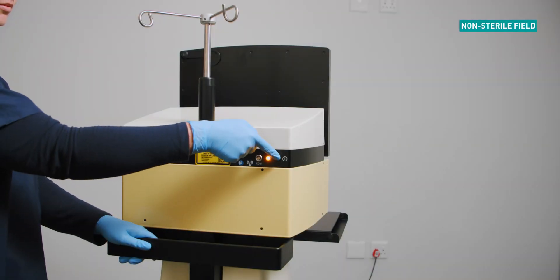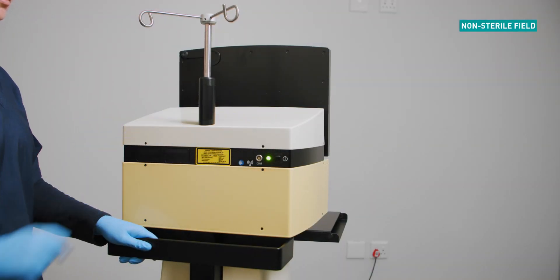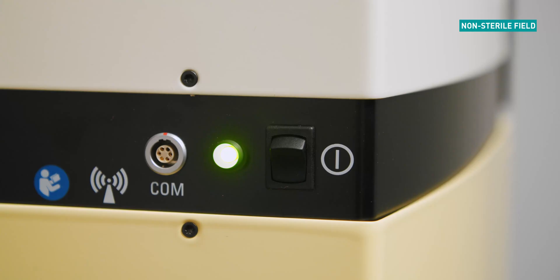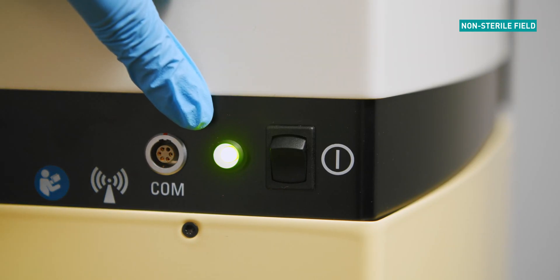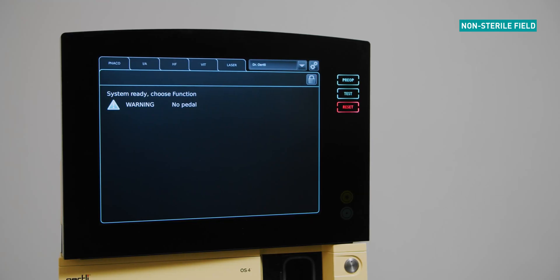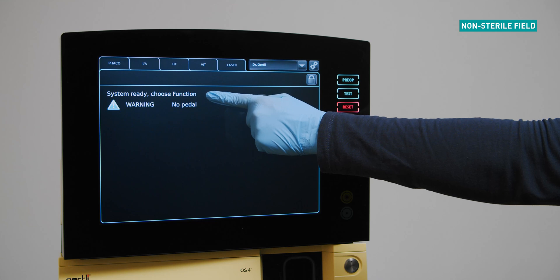Press and hold the on off switch at the back of the machine for two seconds. Ensure the LED indicator is green. If the startup function has been completed successfully, the system ready message will be displayed.